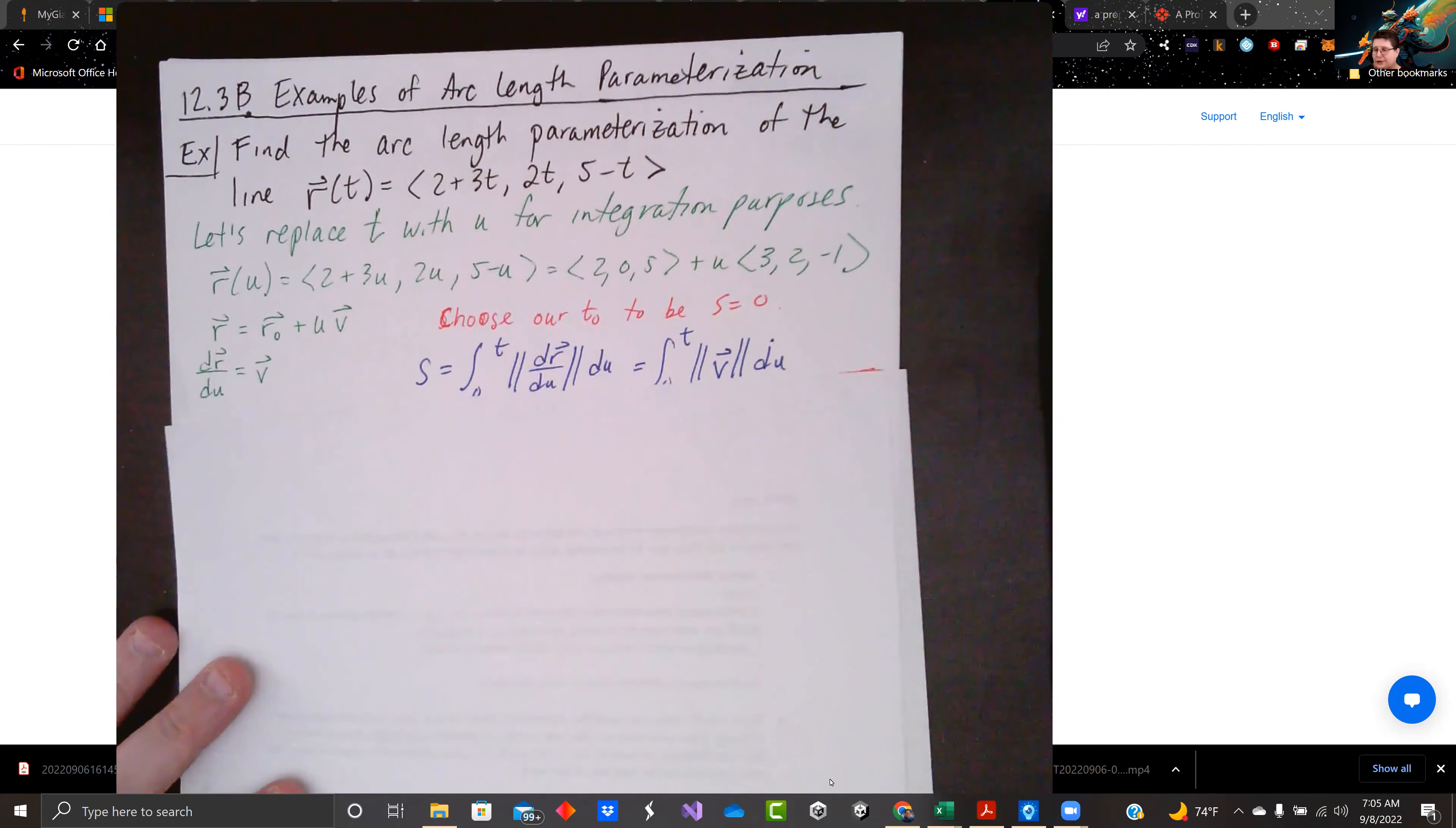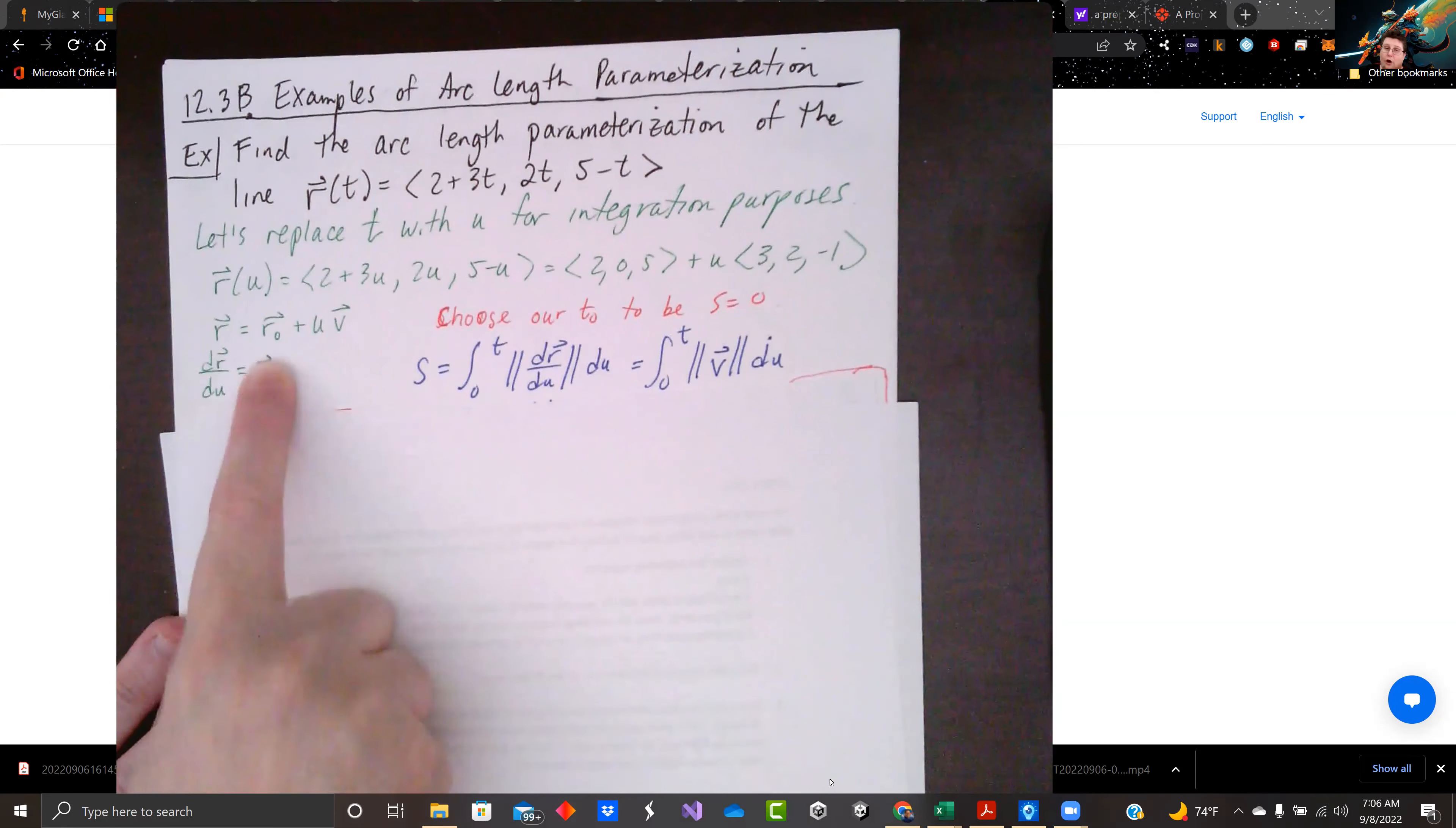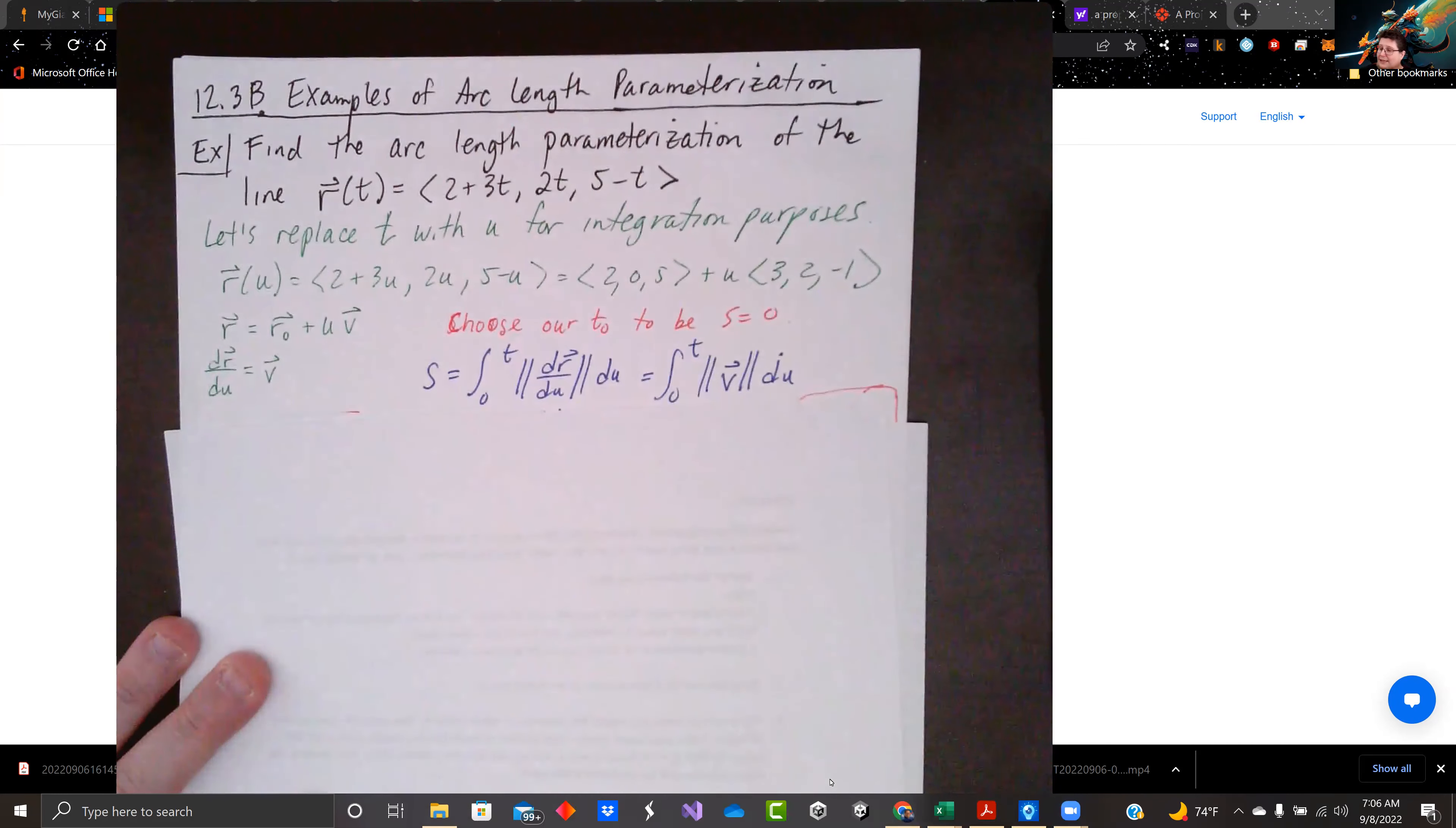We're going to integrate dr/du. So the integral of dr/du, in general, for a line, because this is just a line right here, is the magnitude of v. Isn't that neat? We take the derivative of this with respect to u here. r naught's a constant vector. u is the thing we're taking derivative of. It just goes away. We're left with v. This is consistent for all straight lines.